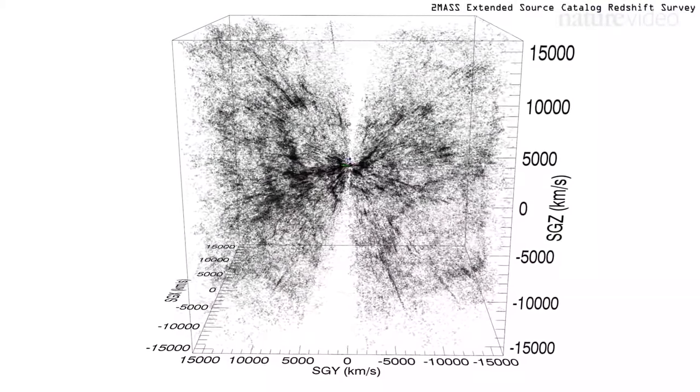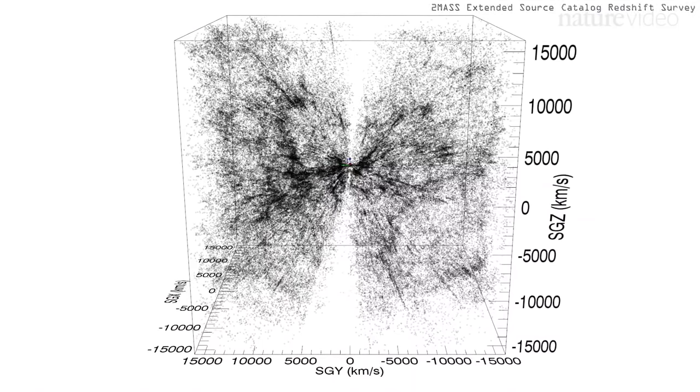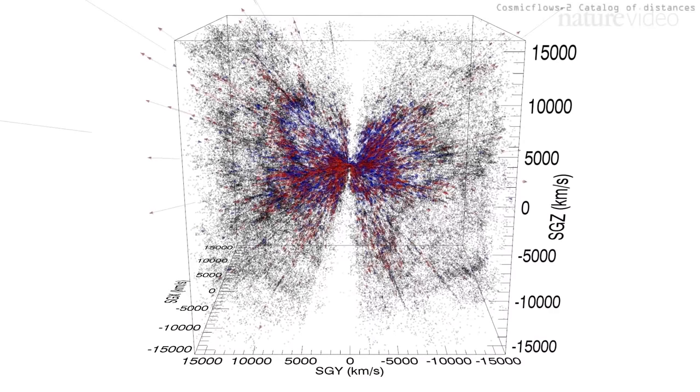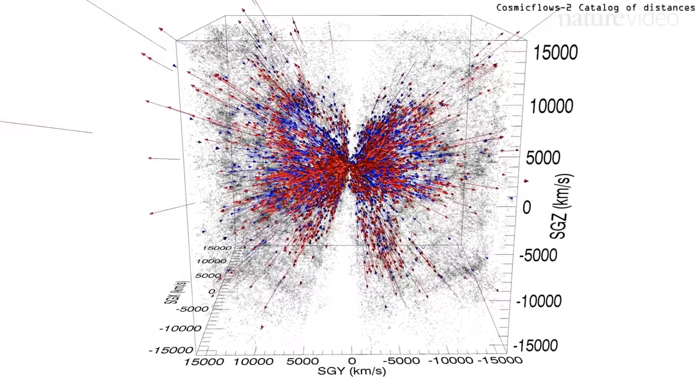They use this data to identify which galaxies are moving towards us, shown in blue, and which galaxies are moving away from us, shown in red.